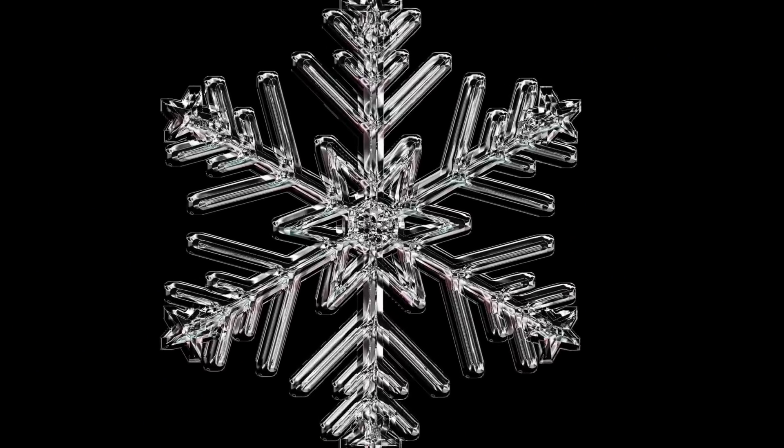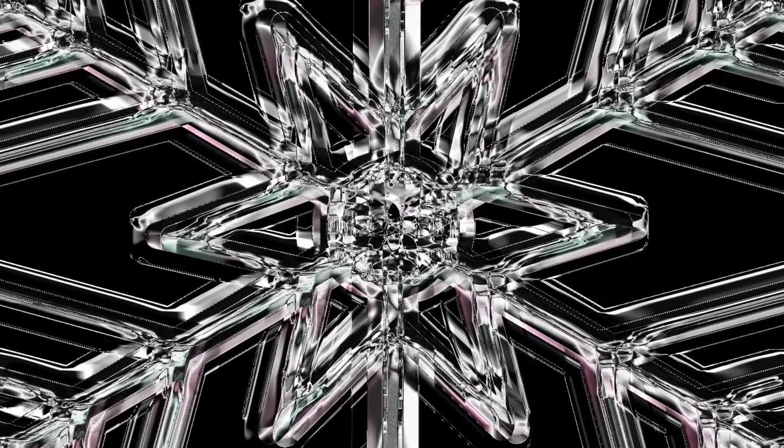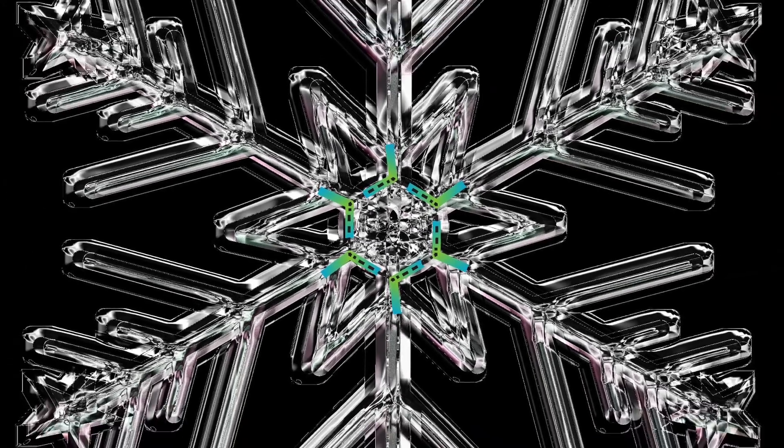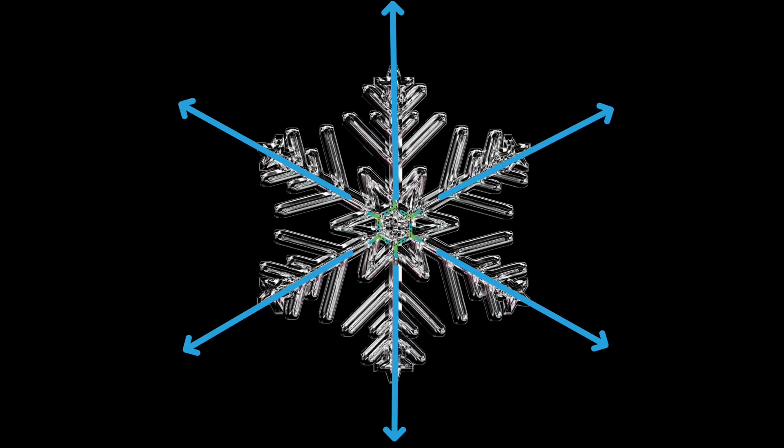For example, snowflakes are made from frozen water vapor, which is water molecules that are floating around in the air. The molecules freeze into hexagons, which is why snowflakes have six arms. One arm for each corner of the hexagon.